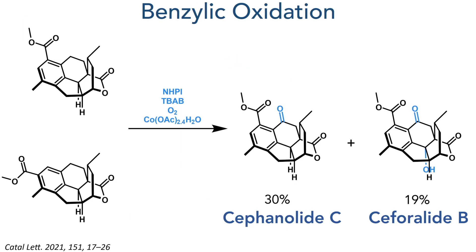By subjecting this mixture to the same benzylic oxidation seen before, the researchers completed the synthesis of the cephanolides, producing cephanolide C in a 30% yield and cephanolide B in a 19% yield.